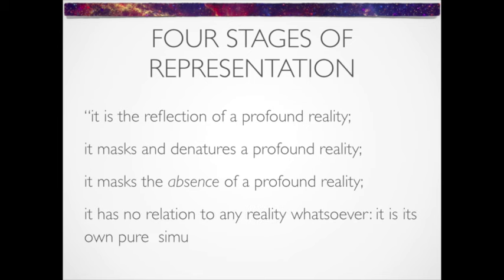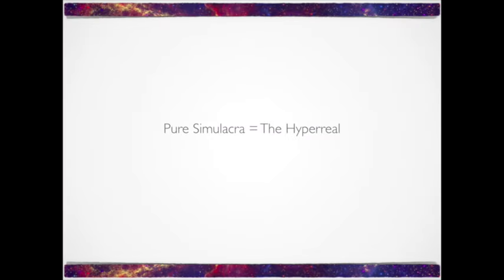The final stage is what Baudrillard calls pure simulation or pure simulacra. Images and representations are no longer concerned with any sense of reality — the image or copy is all that exists. Unlike the third stage, in which a simulacrum pretends that there is an original, in the fourth, images and representations have fully severed that tie. People experience a simulated sense of reality, representations of reality rather than reality itself, and they are no longer concerned with the disconnection from reality. In the postmodern condition, Baudrillard argues the simulation surpasses the real and society begins to produce images of images, copies of copies. The original is gone and humans are removed from reality; instead, they experience the hyperreal.